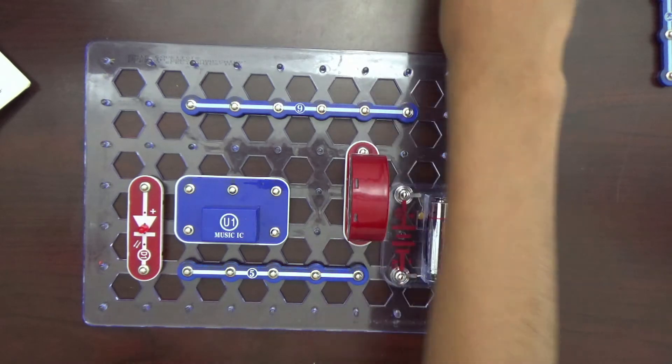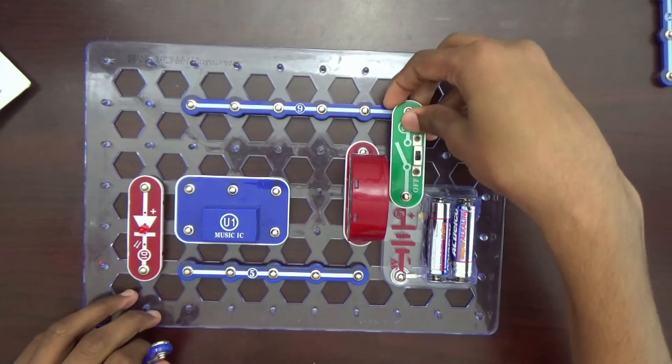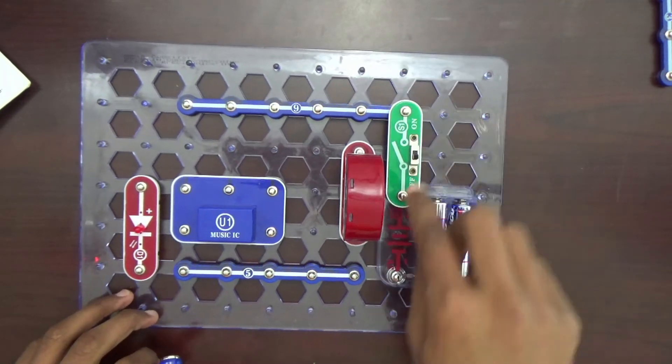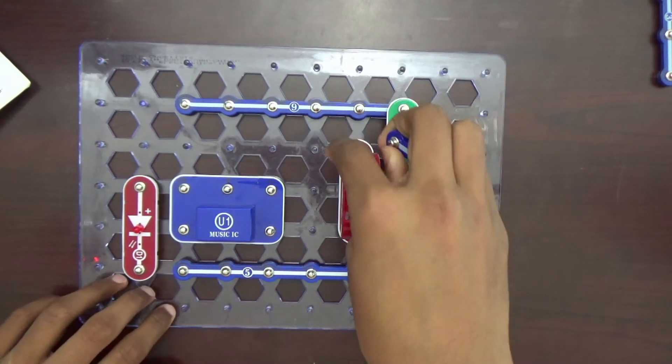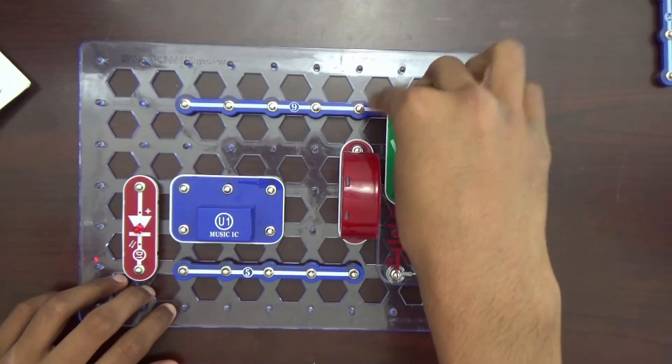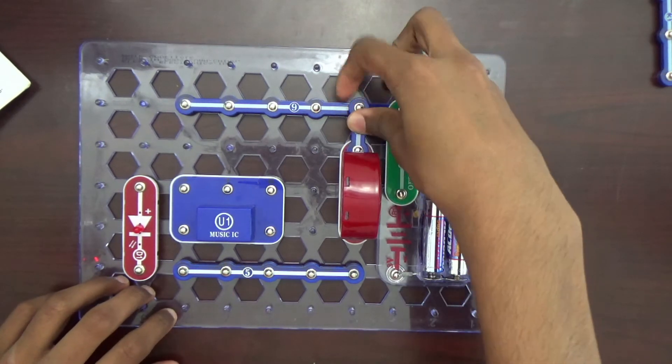We want to do the S1 switch. This is the main power on and off. Connecting the battery and the 6 snap wire. Connect the speaker to the 6 snap wire with a 2 snap here.